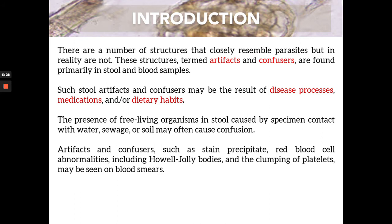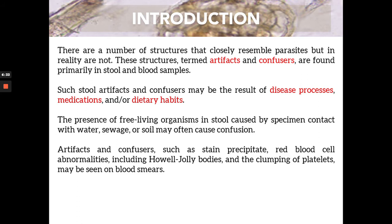For blood samples, artifacts and confusers could be stain precipitate — precipitates from the stain itself during the staining process. They are not significant. There could also be RBC abnormalities, which are important in hematology but not significant in parasitology.